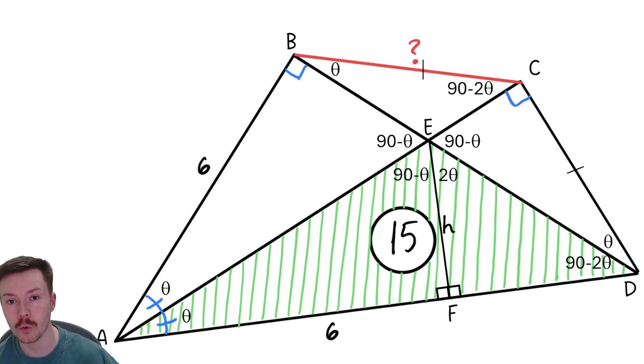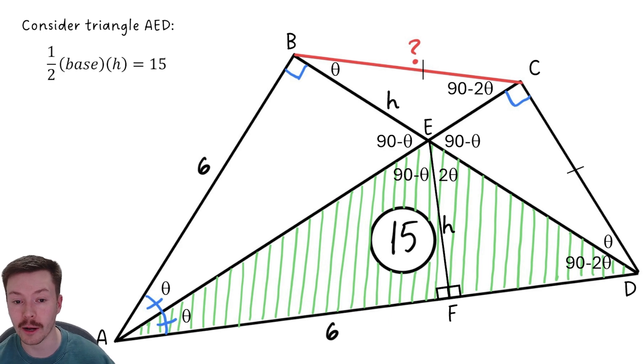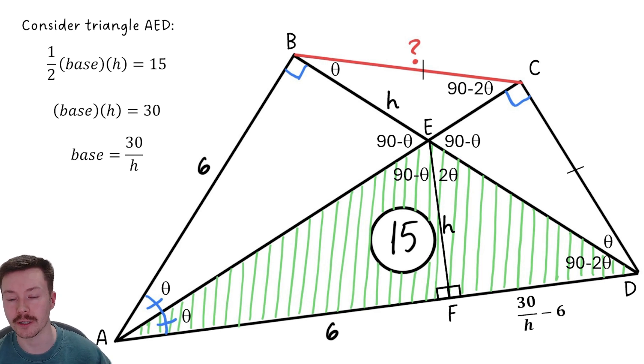Right, now I'm going to label E to F as H, and because we've got those two congruent triangles, B to E must also be H. Okay, now the next thing from there is to start getting F to D. How can we work that out? Well, if we consider the triangle AED, so that full green shaded triangle, we know the area is 15, and you work out the area of a triangle by doing half the base times the height. So double both sides, base times the height is 30. So that means the base is 30 divided by H. Now if we subtract 6 from that, we'll get the length F to D. So 30 divided by H minus 6.